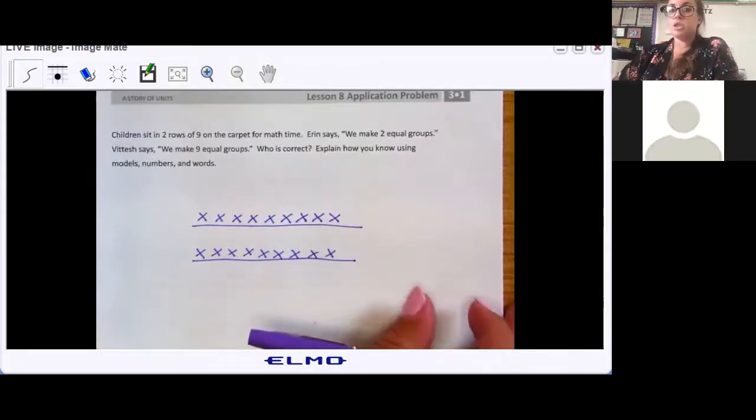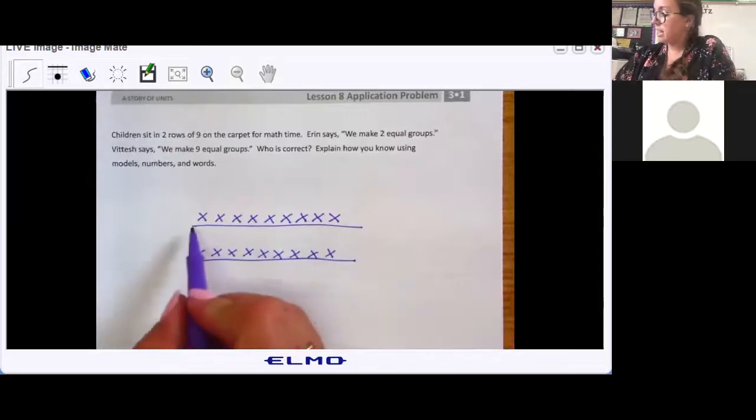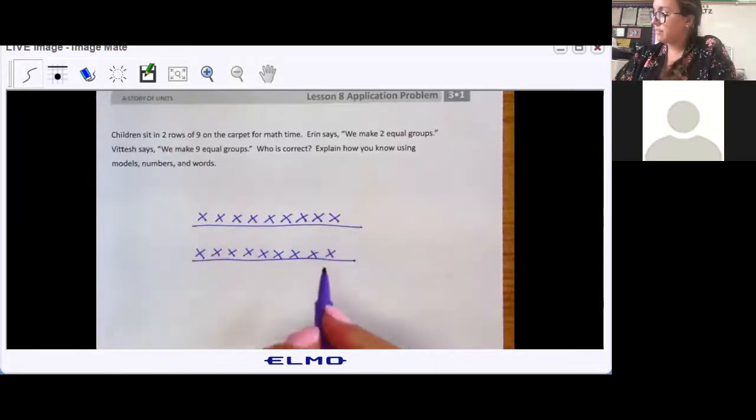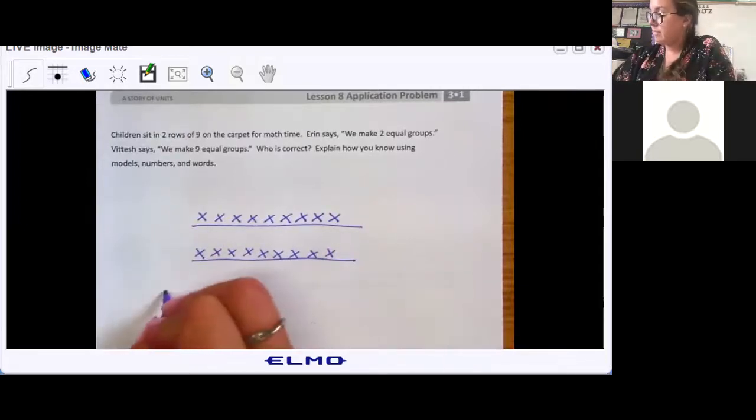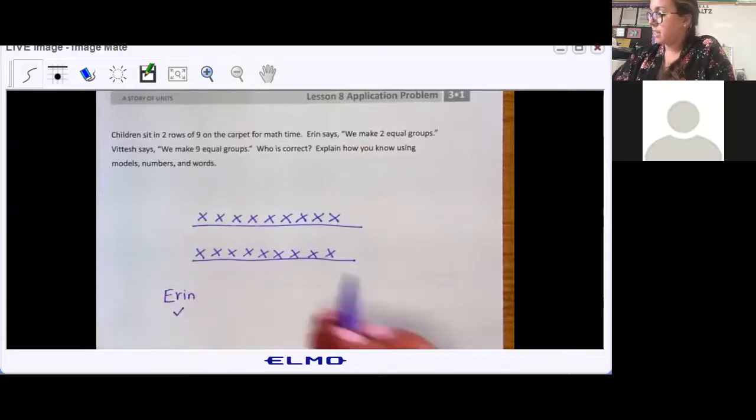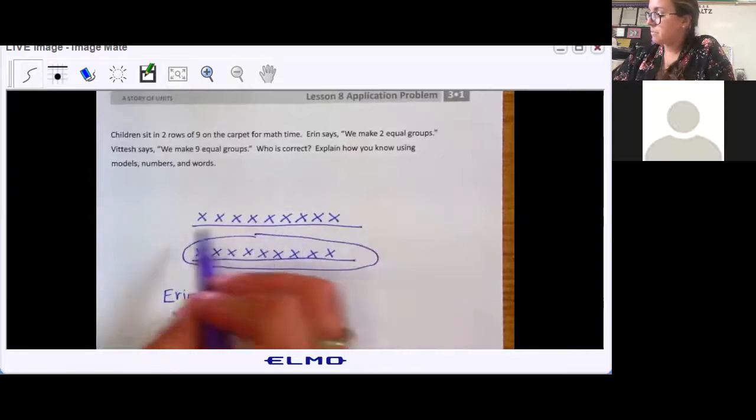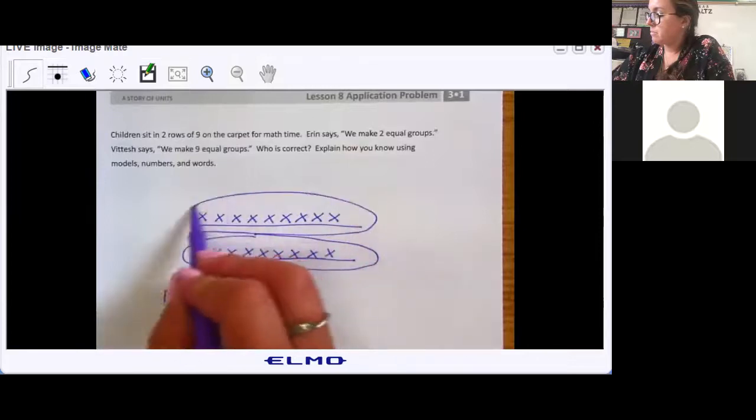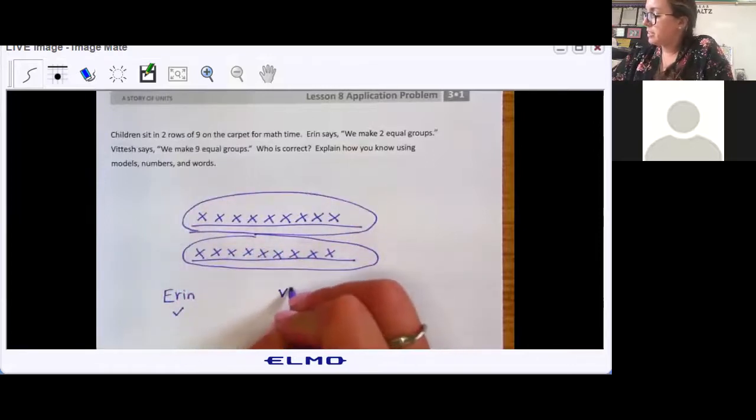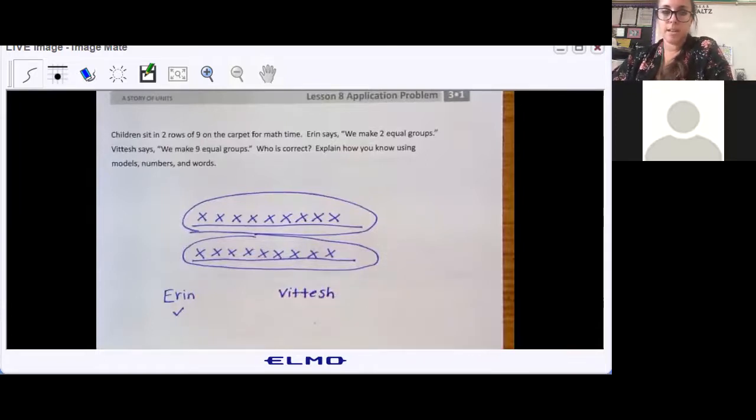Erin says they make two equal groups. Yeah, I see that right here - two rows of nine. So Erin is correct if we circle it this way. But what about Vatish, or Vitesh? I'm not sure how to pronounce that. Are there nine equal groups? There actually is.